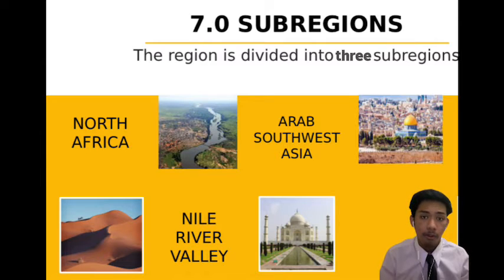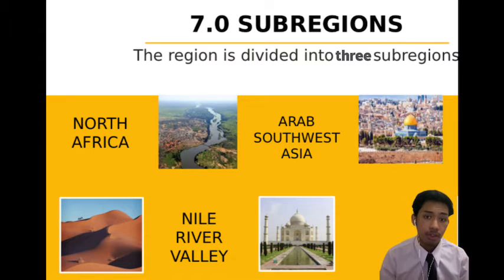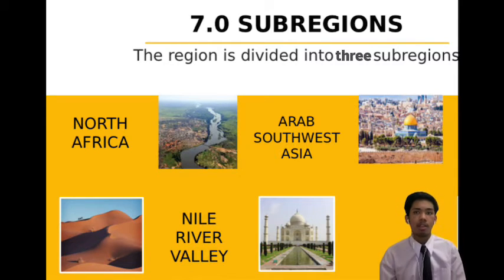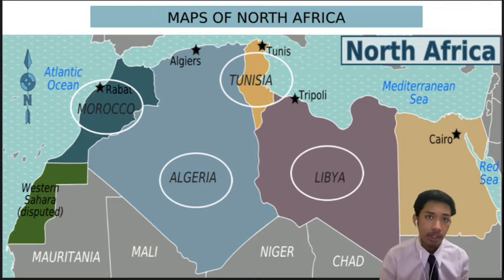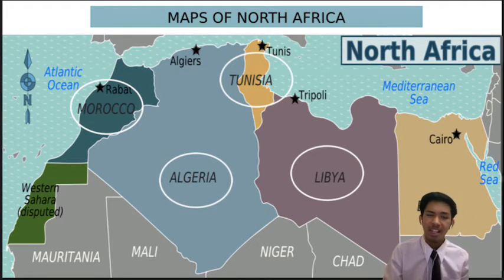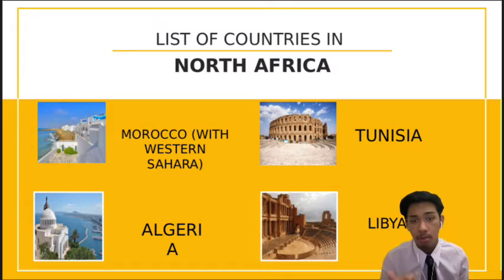Now we have come to the sub-regions of Northern Africa and Southwest Asia. This region is divided into three sub-regions: Northern Africa, Arab Southwest Asia, and the Nile River Valley. For Northern Africa, as you can see on the map, there are four countries listed: Libya, Morocco, Algeria, and Tunisia.